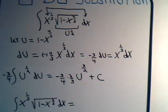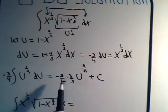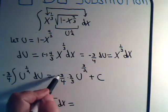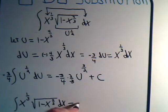x to the 1/3 times the square root of 1 minus x to the 4/3 dx, that will be equal to minus 3/4, that will be equal to minus 3/4 times 2/3. These 3s will cancel, so we'll have minus 1/2.